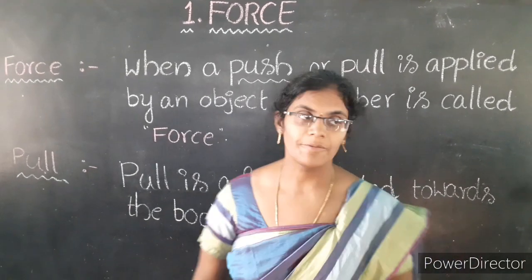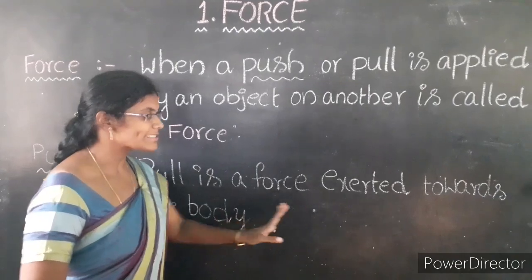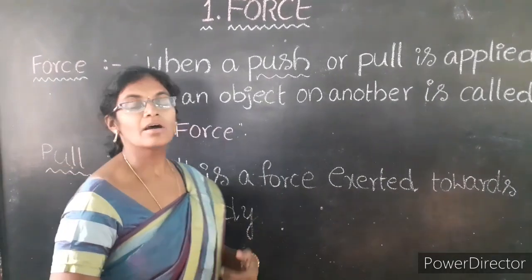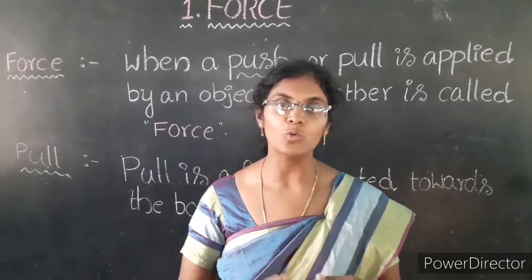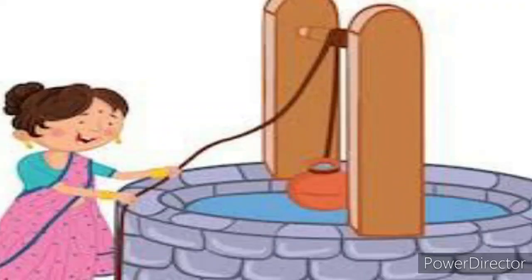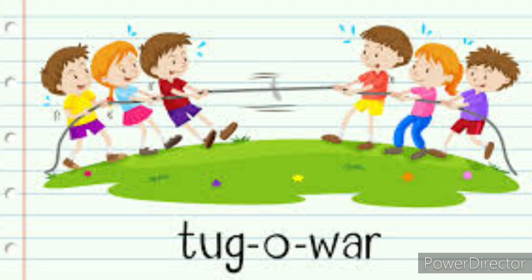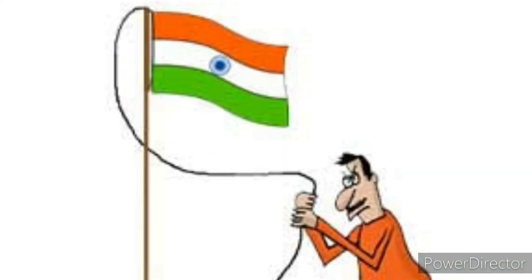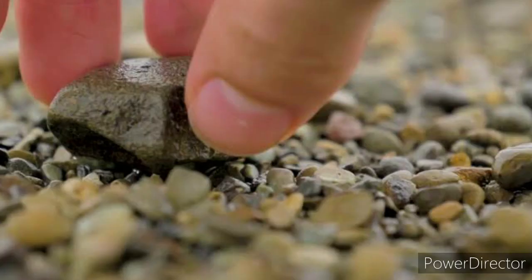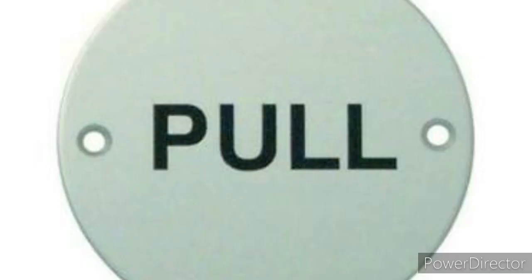What is pull? Pull is a force exerted towards the body. For example, drawing water from the well, tug of war, sipping juice with a straw, hoisting a flag, lifting a bag, picking a stone — in all these activities we exert force which appears as pull.